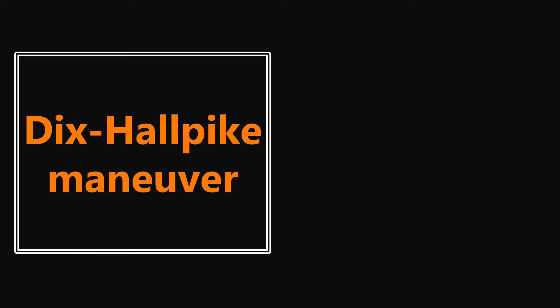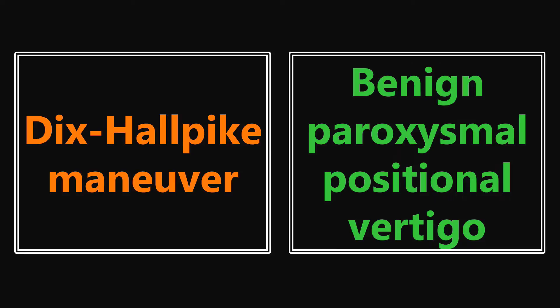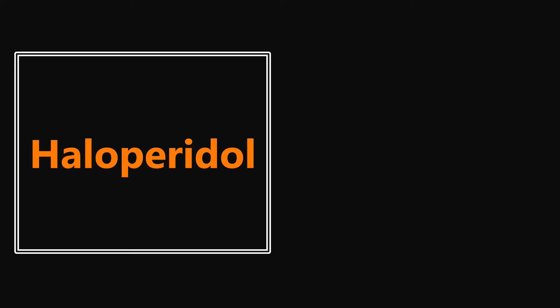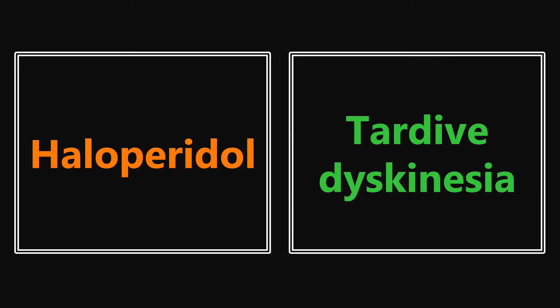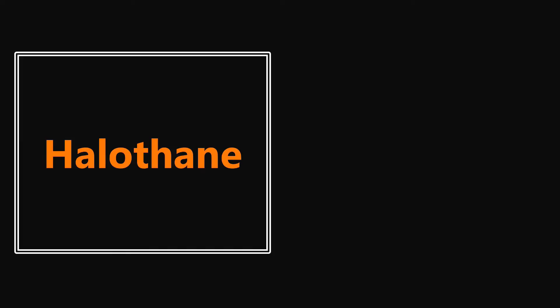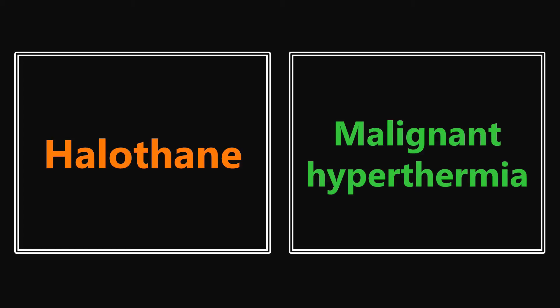The Dix-Hallpike maneuver — osteopathic medical students are probably very familiar with this one. If they reference this being used for a patient, they're talking about benign paroxysmal positional vertigo. Haloperidol: really the only time I've seen it mentioned in questions is when they're trying to get you to think of tardive dyskinesia, which is a very common side effect with Haloperidol use. Going along with that, Halothane — really the only time I've seen this mentioned is when they want you to think about malignant hyperthermia. Halothane will cause malignant hyperthermia in a patient undergoing surgery who has a poor reaction to the anesthesia.